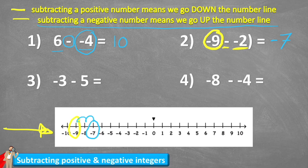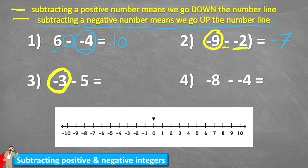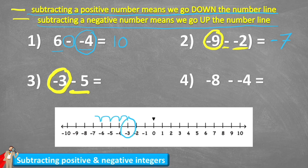Again, following that rule: subtracting a negative number means we go up the number line. Let's have a look at question three. Question three says I have negative three and I am subtracting five — a positive number this time. So we follow the first rule: subtracting a positive number means we go down the number line. I'm at negative three, subtract five: one, two, three, four, five — leaves me on negative eight.